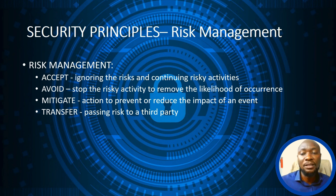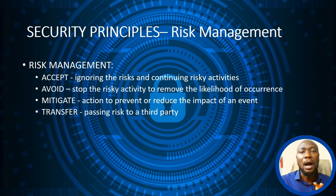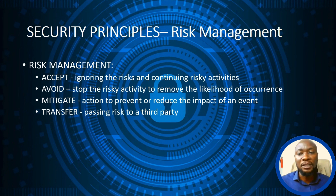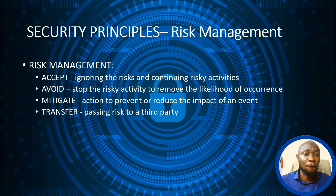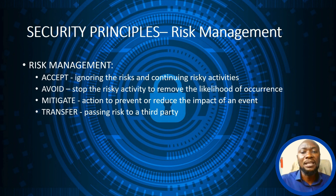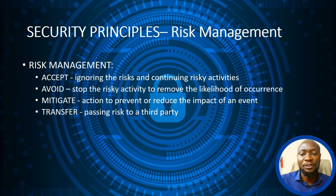The second approach is to Avoid Risk — completely stopping the risky activities to remove the likelihood of an incident. For example, you can decide not to share the information at all. The third approach is to Mitigate Risk — taking action to prevent or reduce the impact of an event. For instance, when sharing information that carries risk, you can mitigate by sharing it with an explanation or on a platform where people can ask questions, reducing the impact of potential misconceptions.